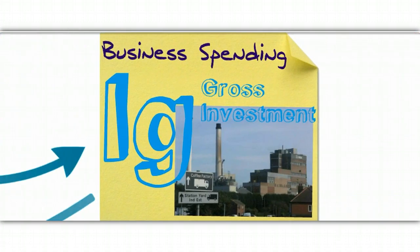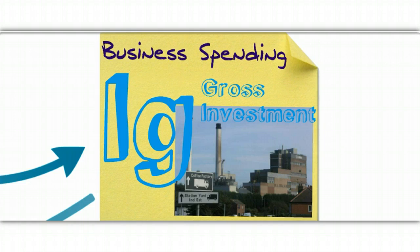IG stands for gross investment — not gross like 'yuck,' but gross as in total. That means we're going to include depreciation, also called consumption of fixed capital, in this number. Gross investment is all business spending. When businesses spend money, we call that investment. In economics, when I talk about investment, I am not talking about putting money in the stock market or financial investments like that — I'm talking about buying capital goods. So we're going to count all the money that businesses spend.